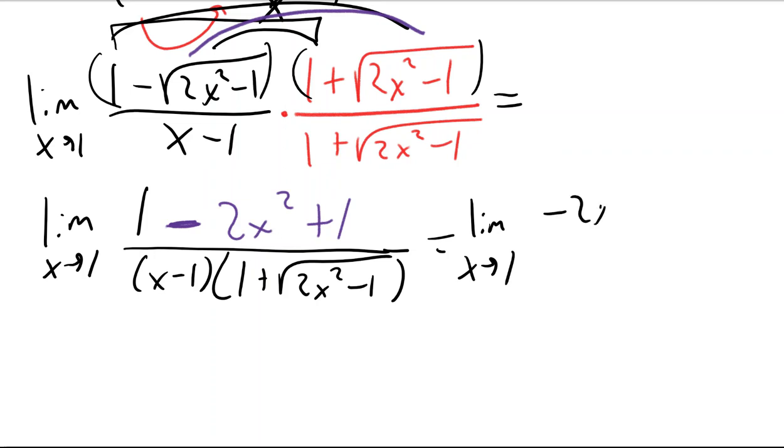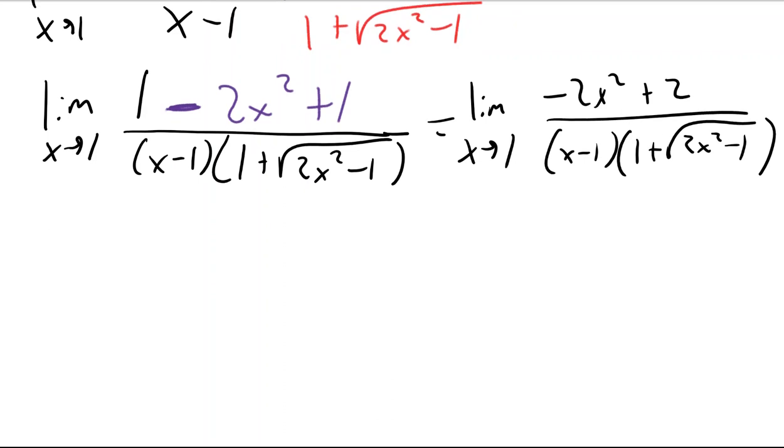So up here I guess I would try to combine like terms. I anticipate that somehow I'm supposed to get an x minus 1 out of this so that it can cancel out with this x minus 1. But that's not something that you can just instantly do here.